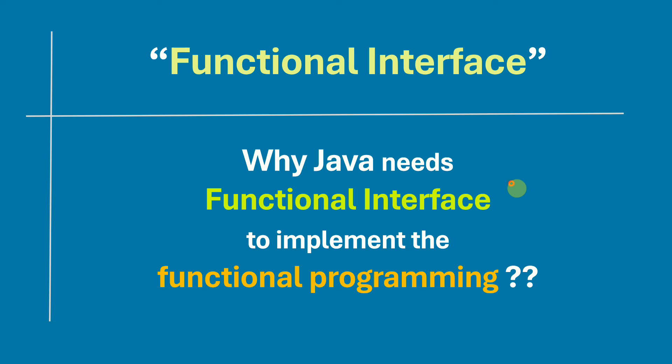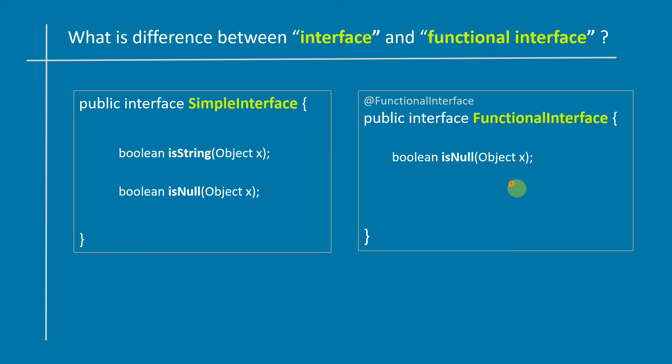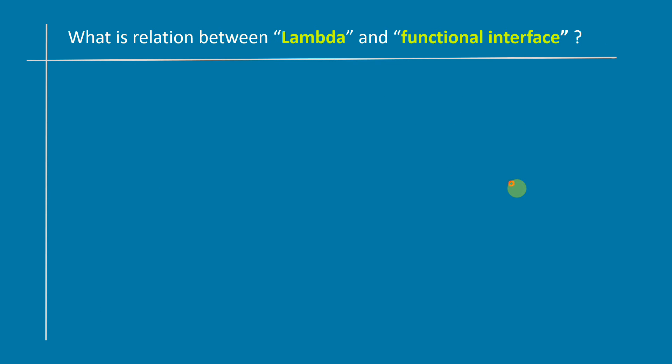Why Java needs functional interfaces to implement functional programming: traditional interfaces can have any number of abstract methods, but functional interface is a special type of interface which can only have one abstract method.